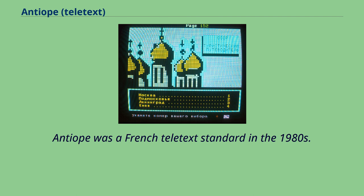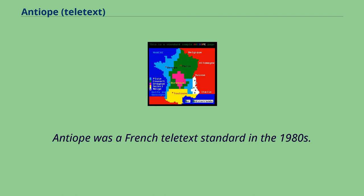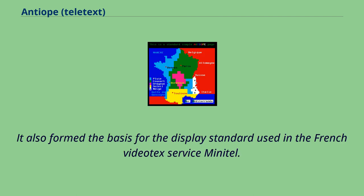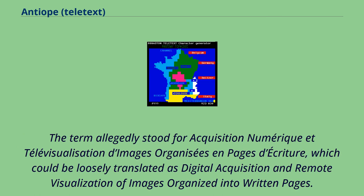Antiope was a French teletext standard in the 1980s. It also formed the basis for the display standard used in the French videotext service Minitel. The term allegedly stood for 'acquisition numérique et televisualisation des images organisées et pages des critères', which could be loosely translated as 'digital acquisition and remote visualization of images organized into written pages'.